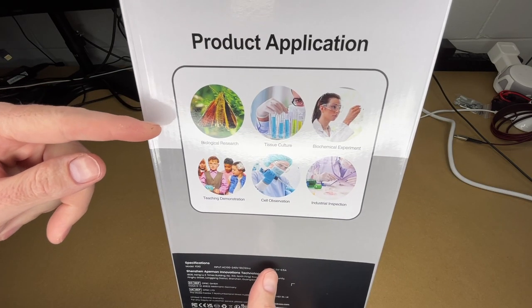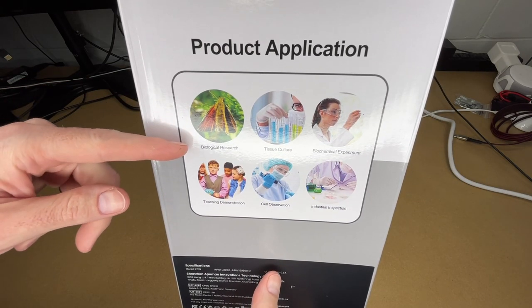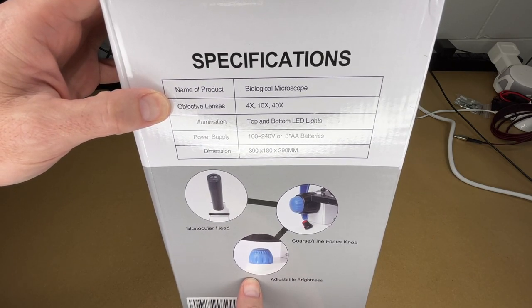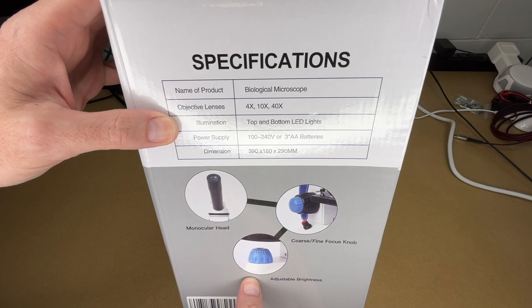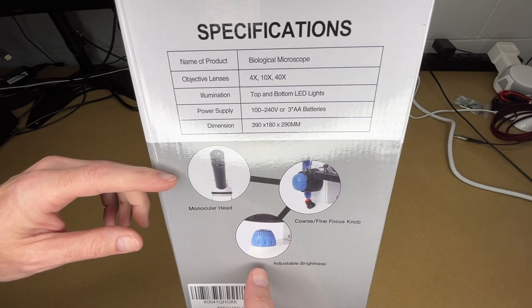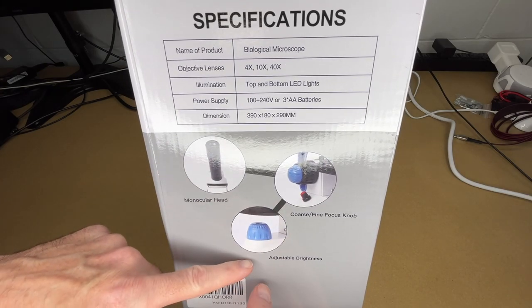If we look at the side here it gives different applications for this. On the other side we have some specs. The objective lenses are 4x, 10x, and 40x. It has top and bottom illumination. The lights are powered by a power supply or three AA batteries. It has a monocular head, coarse and fine focus knobs, and adjustable brightness.